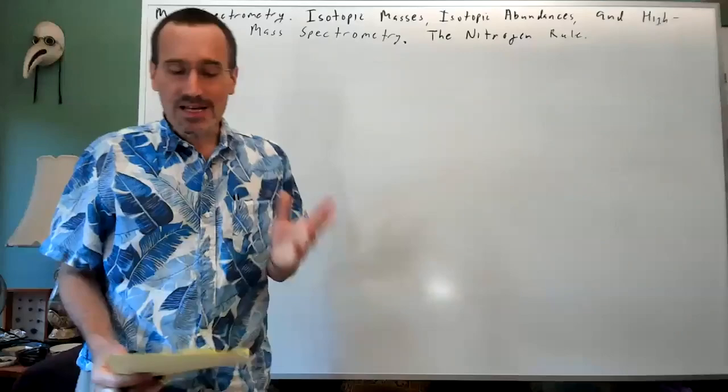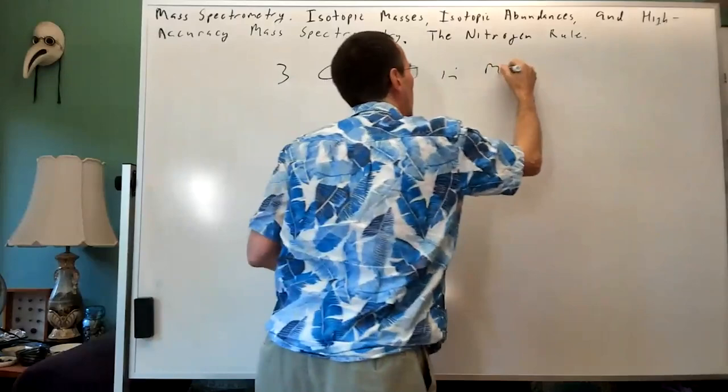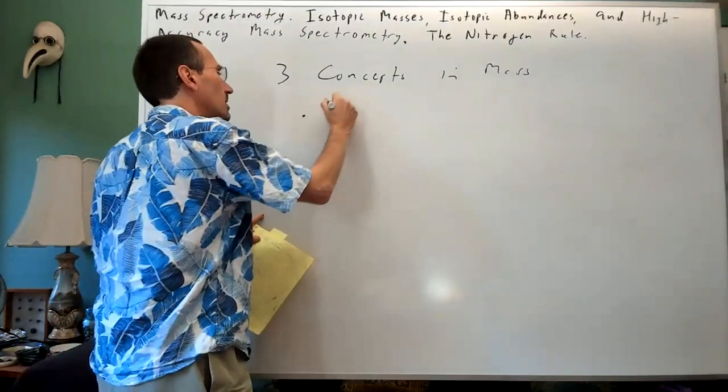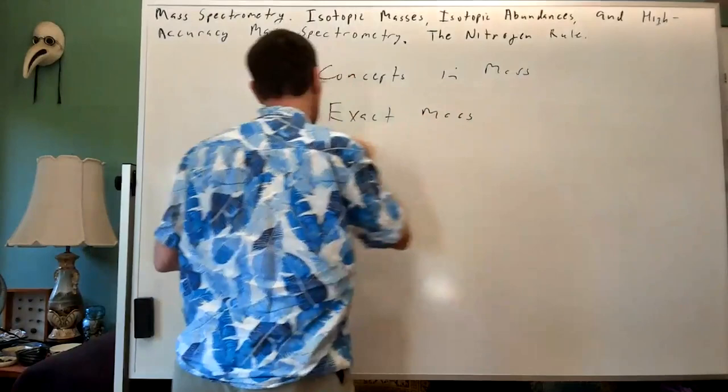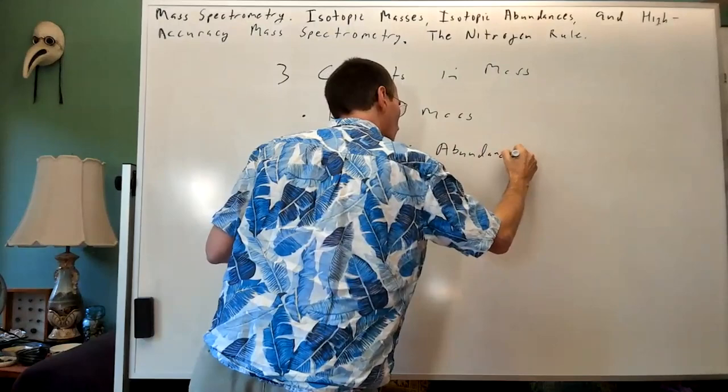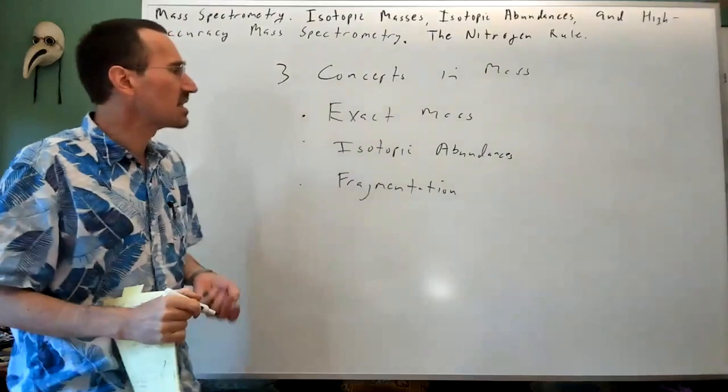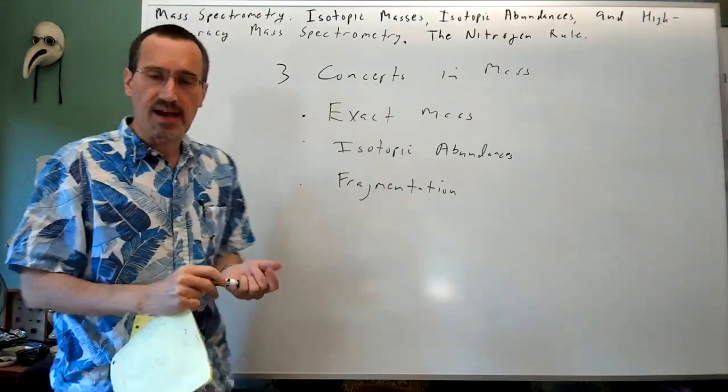So there's three concepts in mass spec, and none of them in their own right are profound. The concepts are exact mass, isotopic abundances, and fragmentation. We hinted a little bit at fragmentation in our last lecture, but honestly we're going to see it in a very different way in EI mass spec. But we're going to save this for next time.